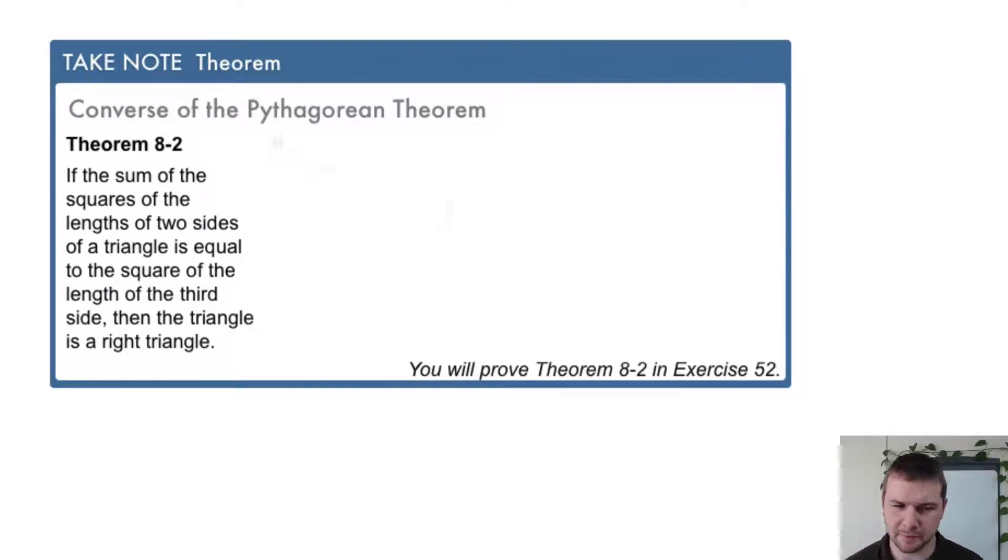So if in the diagram a² + b² = c², then triangle ABC is a right triangle.